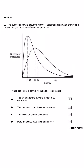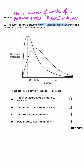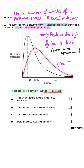The next question is about the Maxwell-Boltzmann distribution shown for a sample of gas X at two different temperatures. Which statement is correct for the higher temperature? The right-hand curve is the higher temperature because its peak is smaller and shifted to the right. Statement A says the area under the curve to the left of the activation energy decreases. For the lower temperature, the area under the curve is everything to the left of the activation energy arrow.